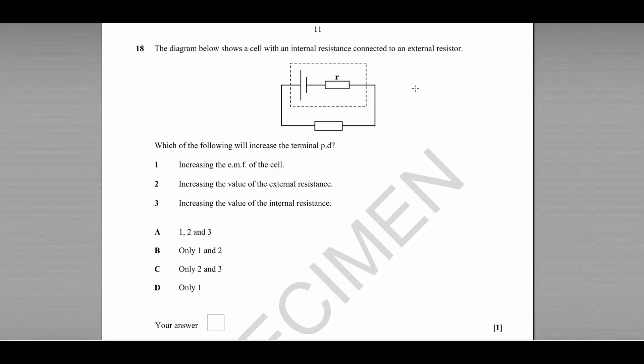So the first one, increasing the EMF of the cell. Well, we know that EMF is equal to V plus IR. So V is equal to the EMF minus I little r. So yes, if we increased the EMF, we would also increase the terminal PD. So statement one is correct.